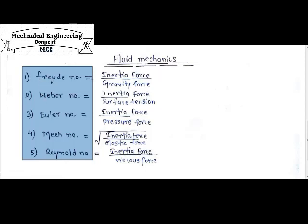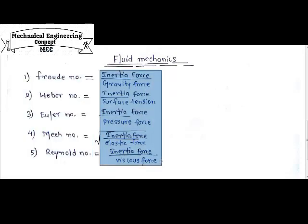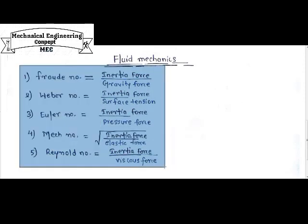There are five different types of numbers: Froude number, Weber number, Euler number, Mach number, and Reynolds number. In all of these five numbers, the numerators have inertia force in common. So first, remember that in all of these five numbers — Froude number, Weber number, Euler number, Mach number, and Reynolds number — inertia force is common and comes in the numerator.